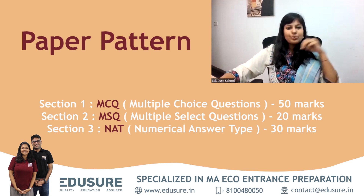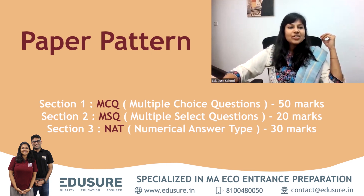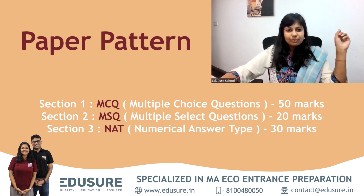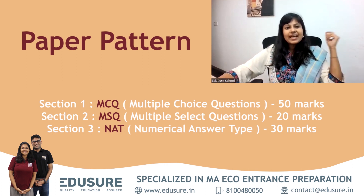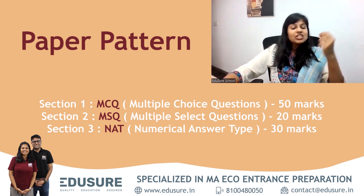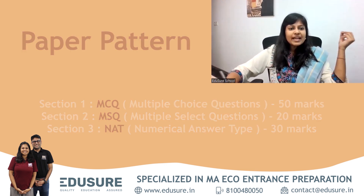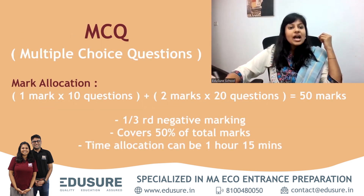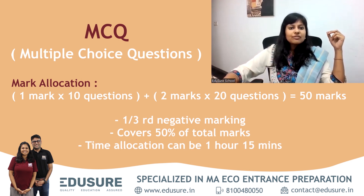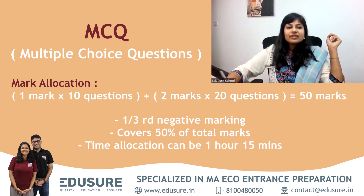The second question is about the paper pattern. There are three sections to the IIT JAM paper. The first section is the MCQ — multiple choice questions. This is by far the largest section: you have 10 questions for one mark and 20 questions for two marks, making it 50% of the paper. The drawback is there is one-third negative marking.